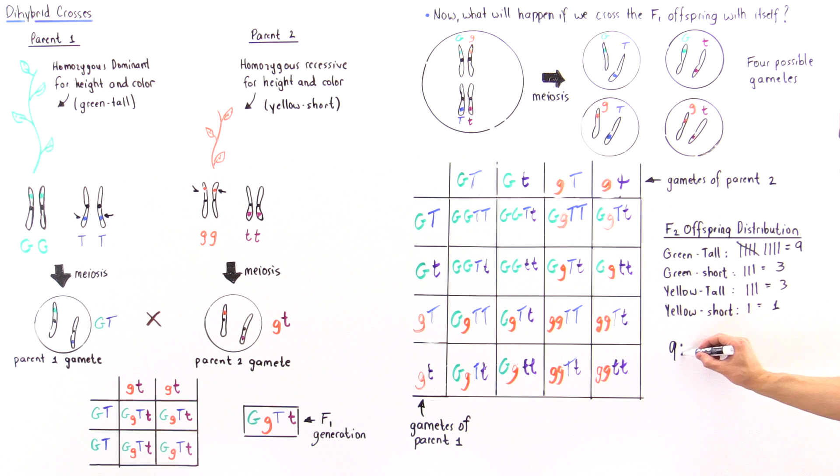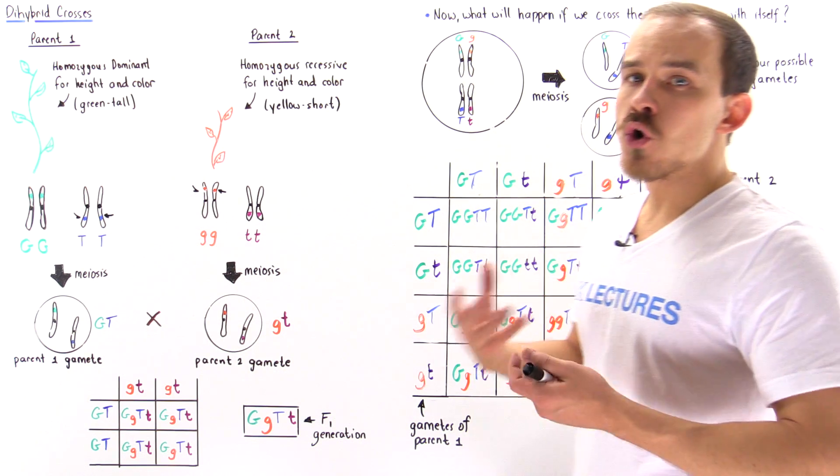Now nine total here, we have three total here, three total here, and we have one total here. So we see that the ratio is nine to three to three to one. This is the ratio of the four different types of phenotypes of our offspring. So we have four potential phenotypes and these are the ratios.